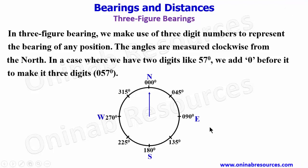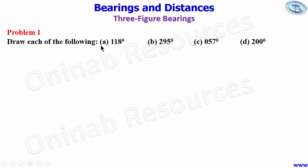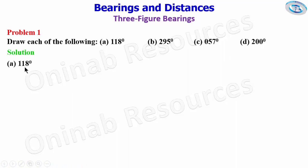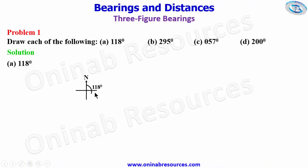That's the demonstration of three-figure bearings. Now we go ahead to solve some problems. For problem one, draw each of the following: a) 118 degrees, b) 295 degrees, c) 057 degrees, and d) 200 degrees. Starting with part a, we need a position — this is our cardinal point. We are only interested in the north. We start from the north and move clockwise: this is 90 and that is 118, so we draw the line. We have drawn the bearing of 118 degrees.